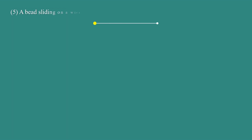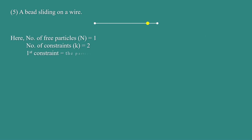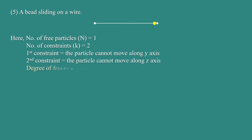Example: a bead sliding on a wire. Here, the number of free particles N = 1 and the number of constraints K = 2. The first constraint is that the particle cannot move along the Y-axis, and the second constraint is that the particle cannot move along the Z-axis. Therefore, degree of freedom = 3N − K = 3(1) − 2 = 1.